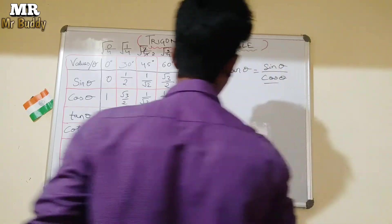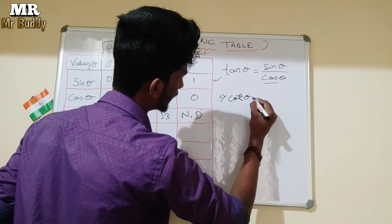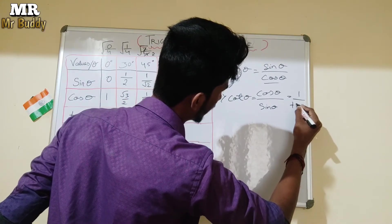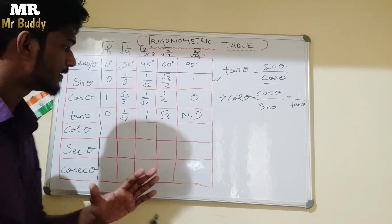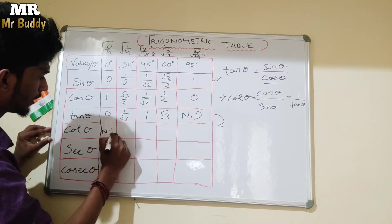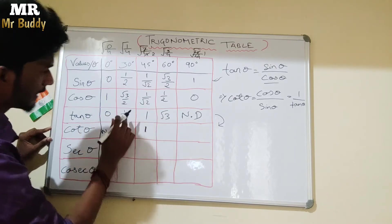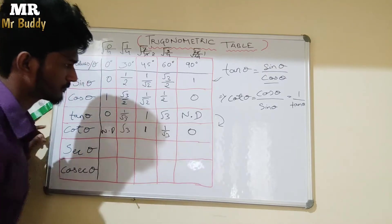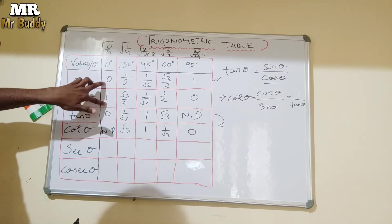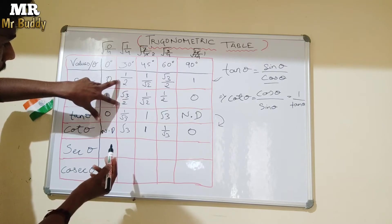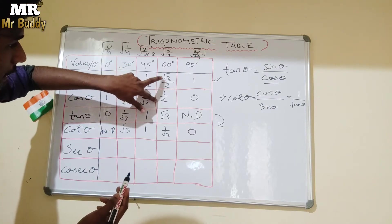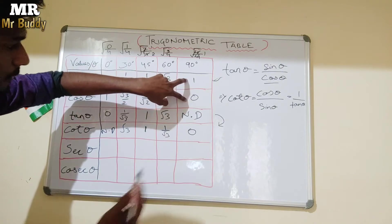For cotθ values, cotθ is equal to cosθ divided by sinθ, or 1 upon tanθ. The easiest way is to just reverse the tanθ values. So starting from tan 90° (not defined), reversing gives: not defined, √3, 1, 1/√3, and 0. You can verify: cosθ divided by sinθ gives the same results.